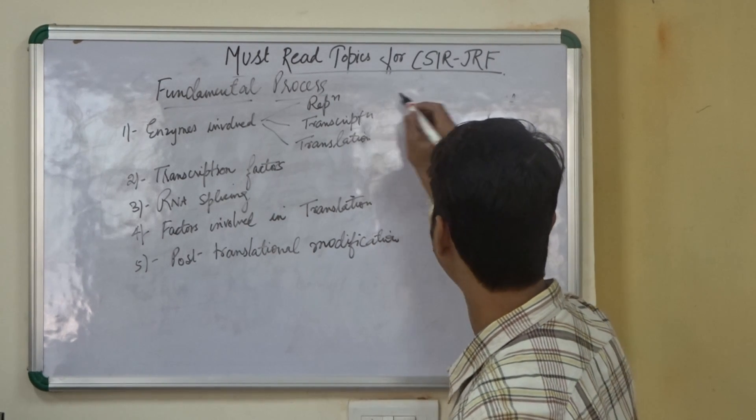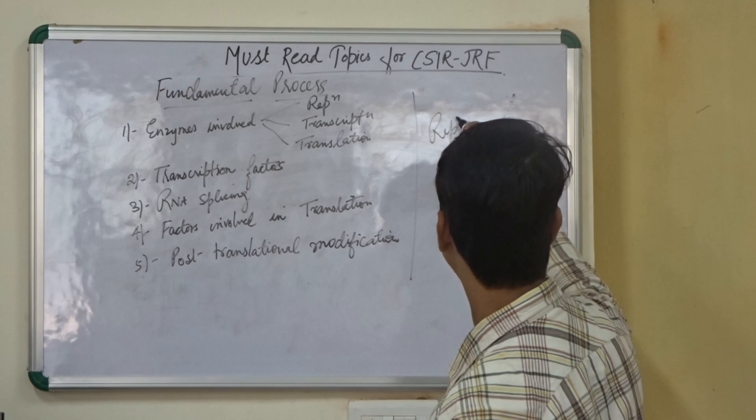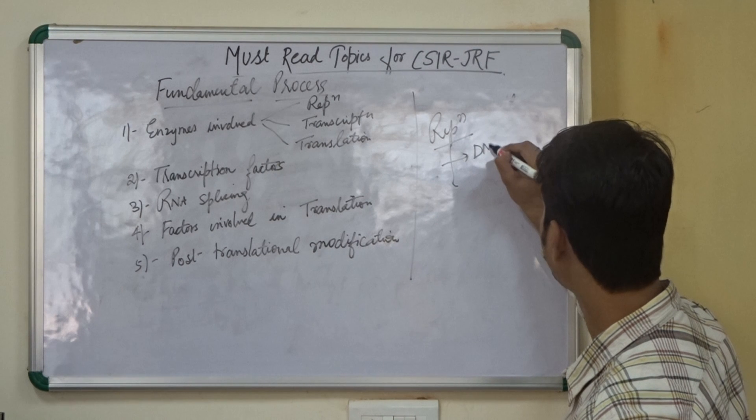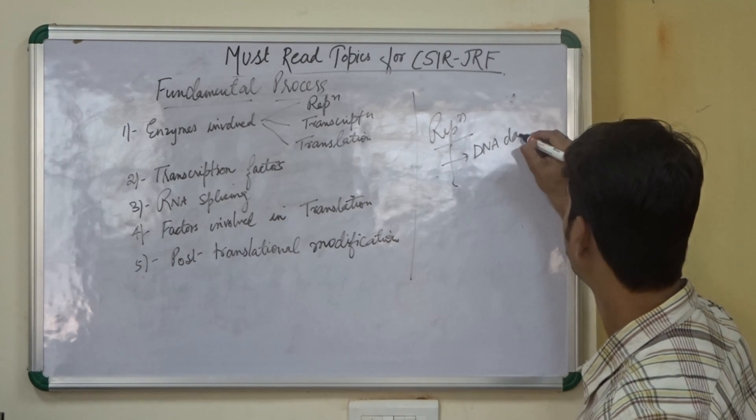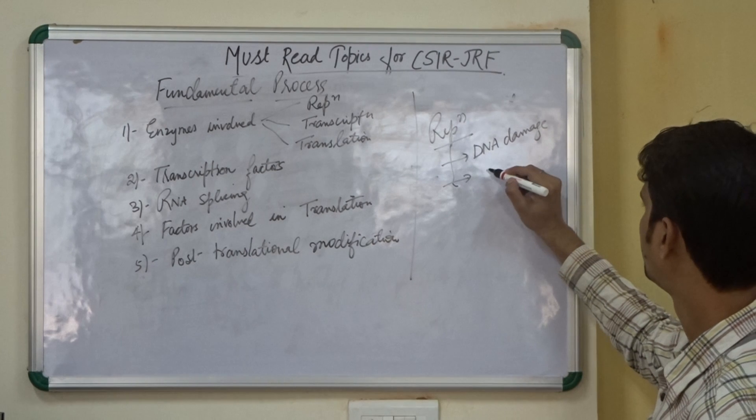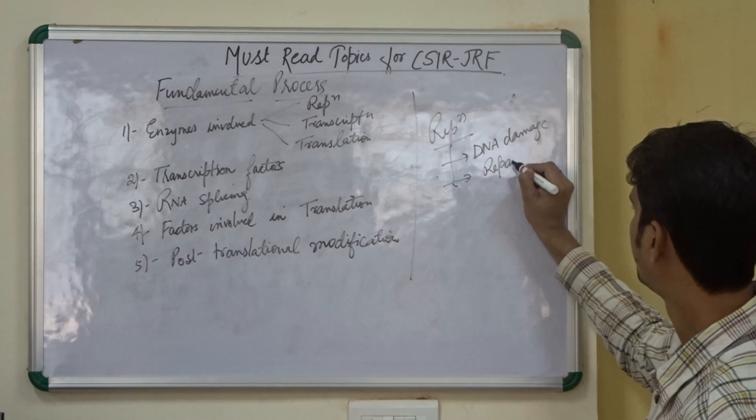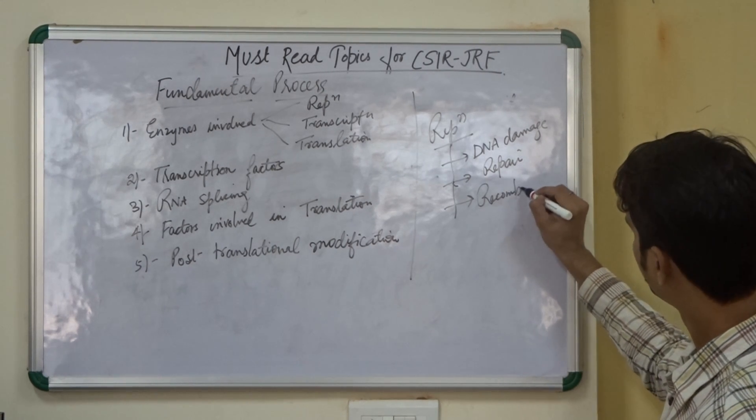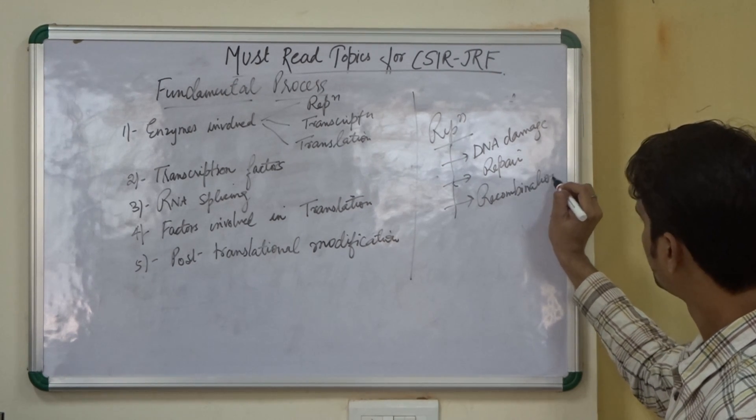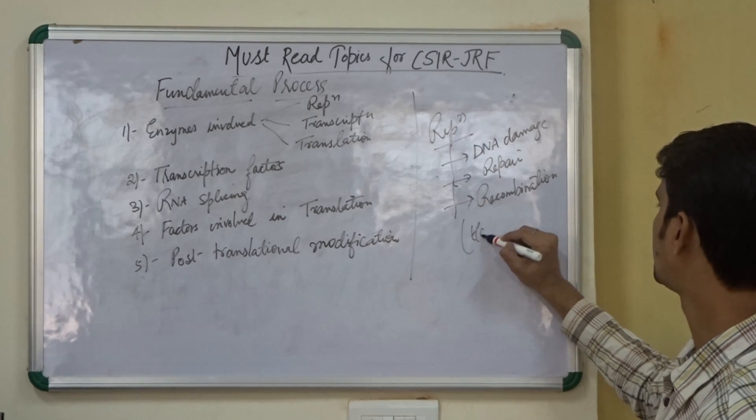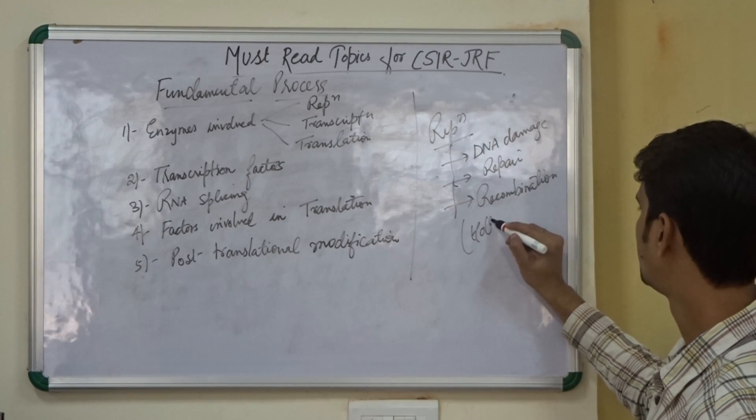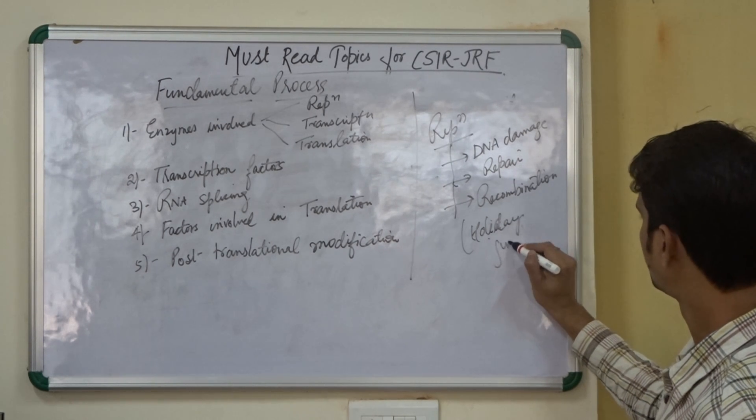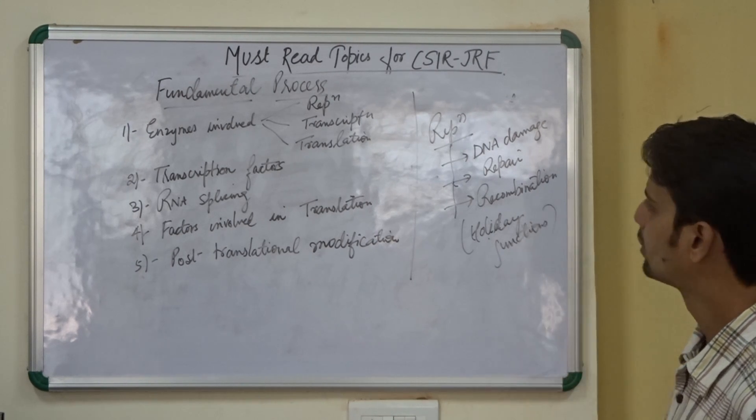In the replication part, you need to know about the DNA damage also. DNA damage, repair and recombination. Do read about the Holliday junctions that are being formed.